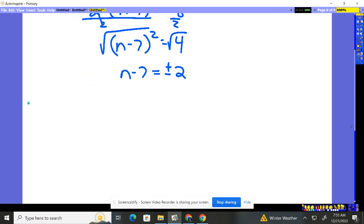So we take our n minus seven, we set it equal to the positive two. We take our n minus seven, we set it equal to the negative two and solve. Get our two solutions.